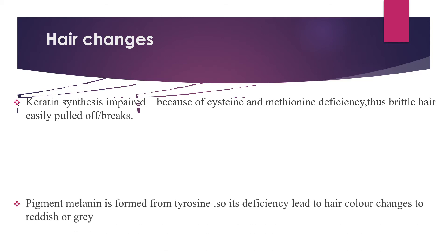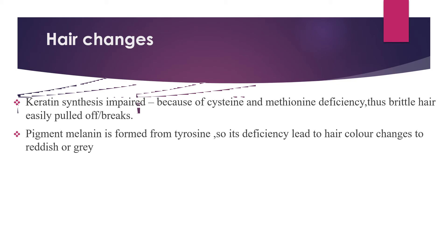The second cause of hair change is color change — the hair of severe acute malnutrition children is most often reddish or gray. This is due to pigment melanin deficiency, because melanin is formed from tyrosine, so tyrosine deficiency leads to hair color change to reddish or gray.